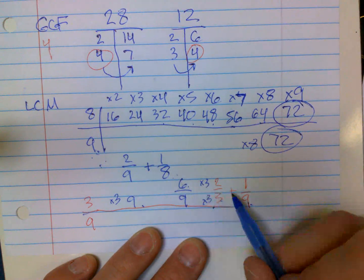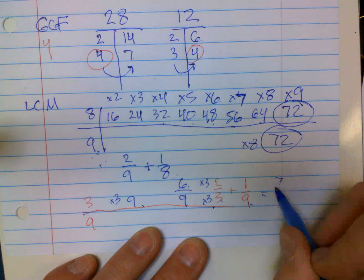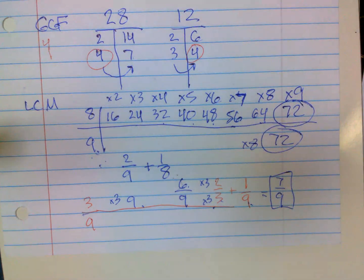ninths. Six ninths plus one ninth equals seven ninths. That's why we need to know. All right, thank you, done with that one.